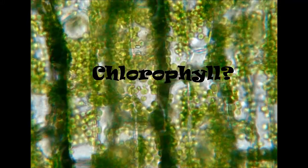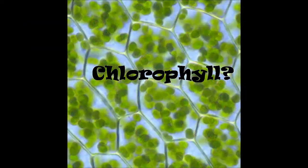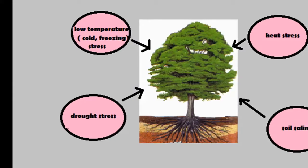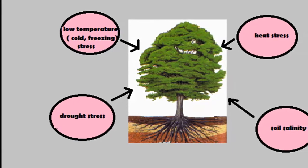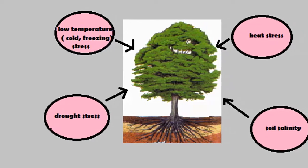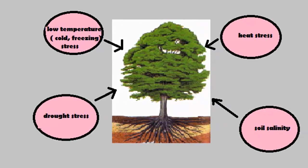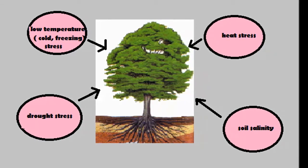The green photosynthetic pigment allows plants to obtain energy from the sun by converting the sun's rays into chemical energy. Climatic factors such as drought, extreme temperatures, and soil with a high salt concentration impose an osmotic stress that can lead to turgor loss.